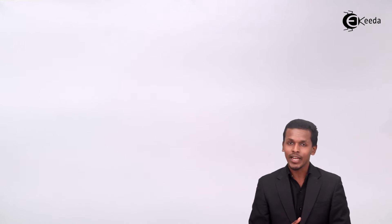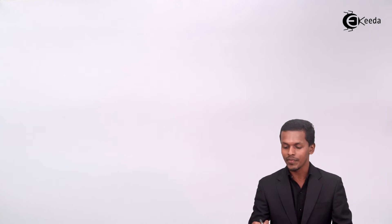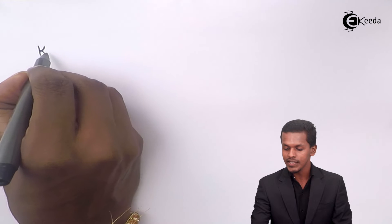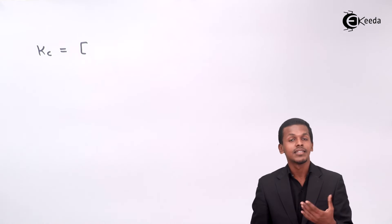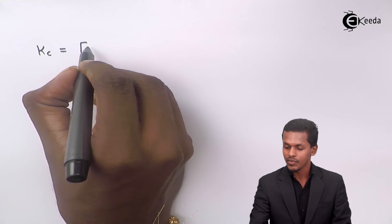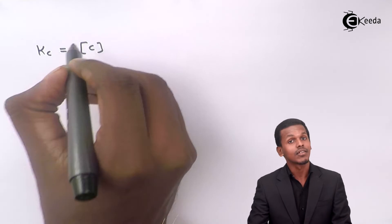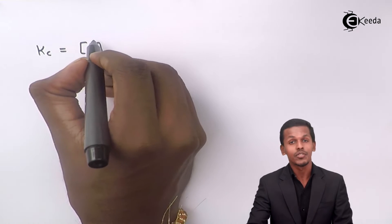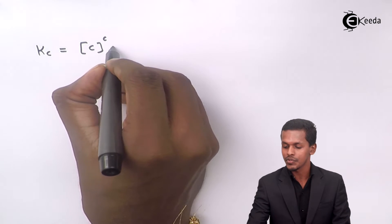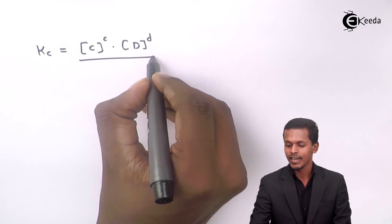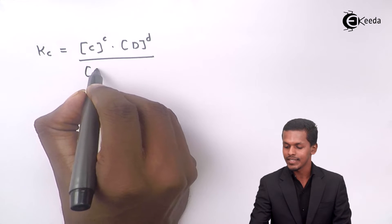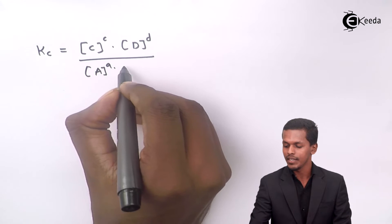Before calculating, it is essential to understand the formula. Kc is the ratio of the product of the concentration of products raised to their stoichiometric coefficients — that is, concentration of C raised to c, into concentration of D raised to d — divided by concentration of reactants A raised to a and B raised to b.